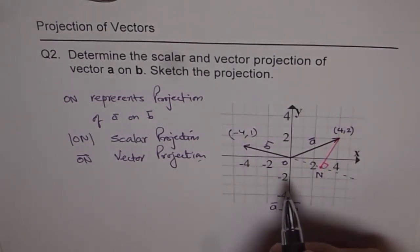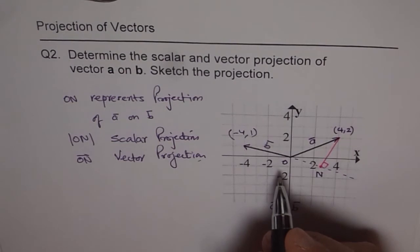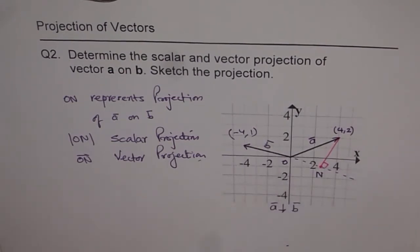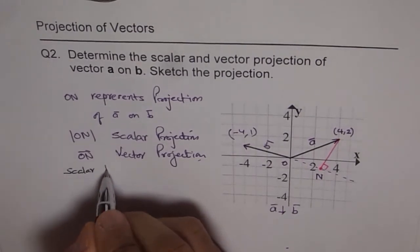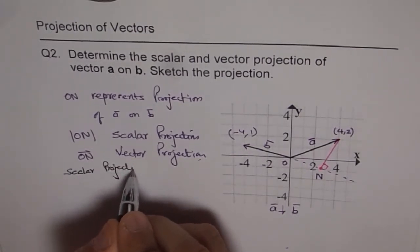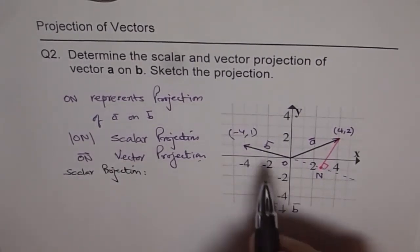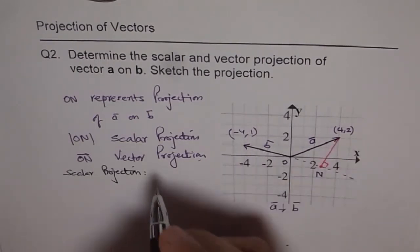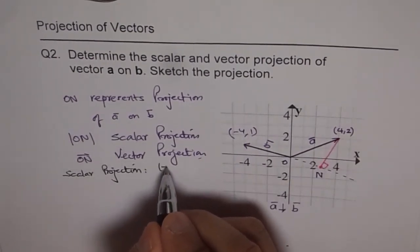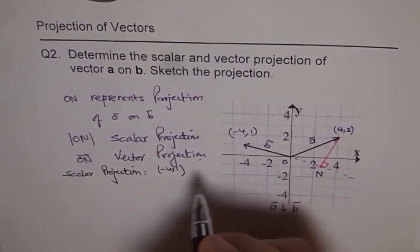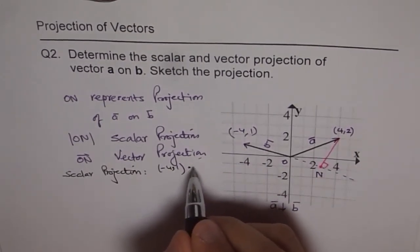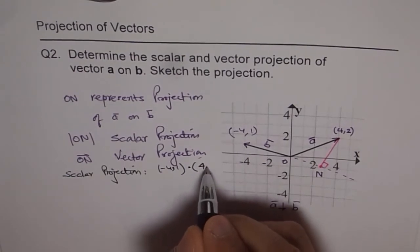And now you can use the formulas and get your answer. So for scalar projection, what is the formula? It is a dot product of these two, which is minus 4, 1. I should have written 4, 2 first, but dot product is commutative, so it is OK.